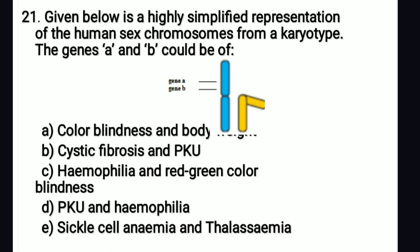Given below is a simplified representation of the human sex chromosomes from a karyotype. The genes on A and B could be: the two chromosomes depicted are the X chromosome (blue) and Y chromosome (yellow). The right answer is option C — haemophilia and red-green colour blindness. Both are sex-linked disorders with genes located on the X chromosome.